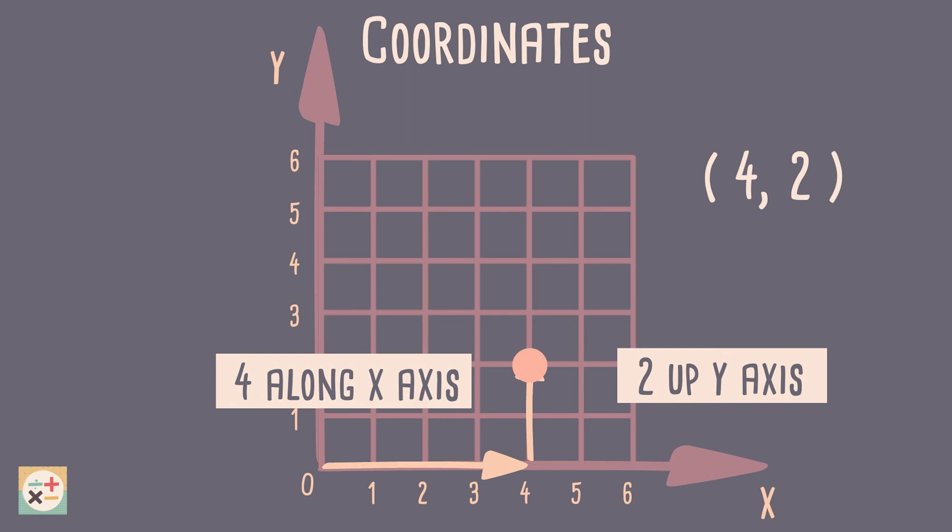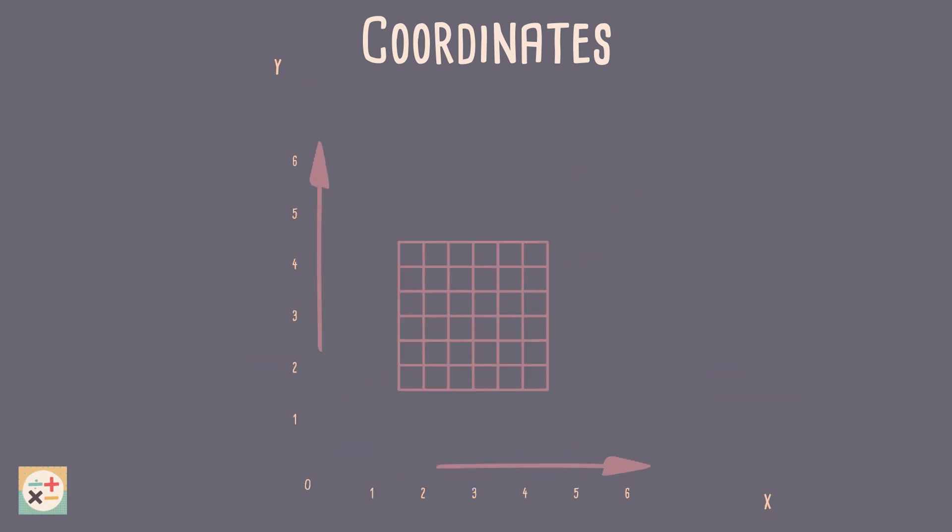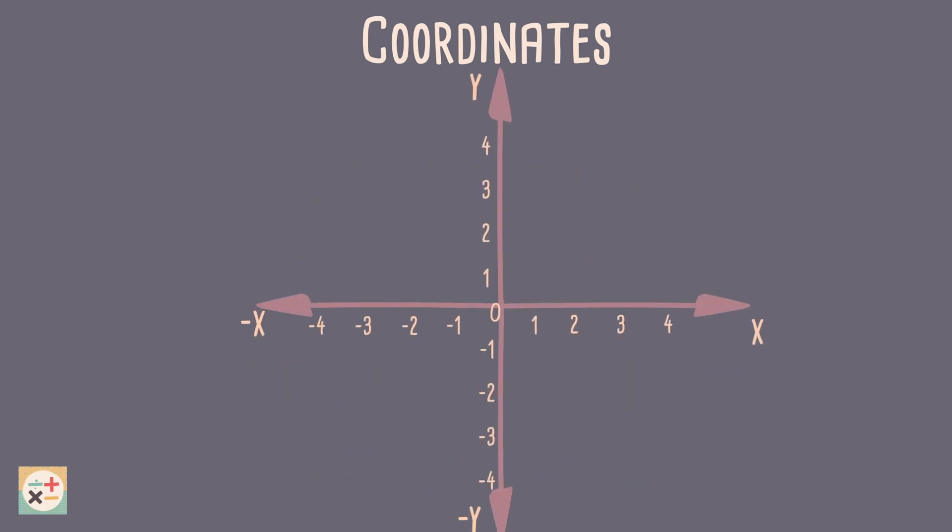Now, what about when there is a negative number in the coordinate? Well, a negative x-value would go left on the x-axis, and a negative y-value would go down.